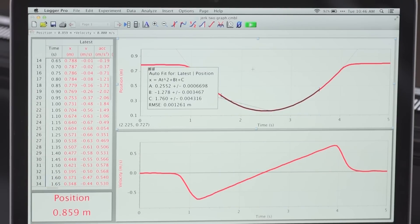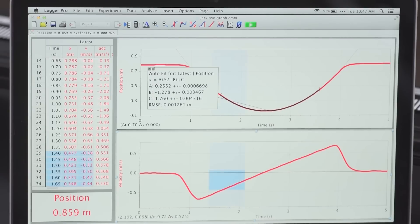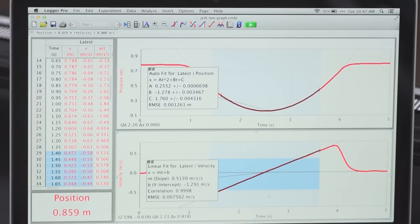And you see that the position data follow that expected parabolic form. I could go to the velocity graph, select the constant acceleration portion, and request a linear fit. And indeed, you can see that the fit is quite good and gives me a good measure of the value of the acceleration.